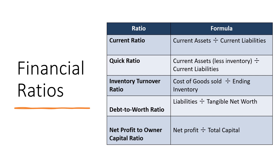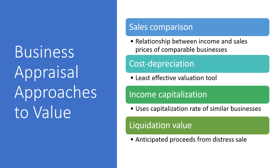This slide covers financial ratios. Looking at the chart, you can see the formula to determine each ratio: current ratio, quick ratio, inventory turnover ratio, debt to worth ratio, and net profit to owner capital ratio. Business appraisal approaches to value include sales comparison, cost depreciation, income capitalization, and liquidated value.